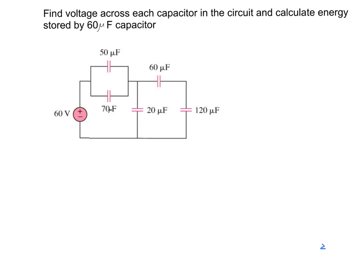Now let's start solving the problem. Looking at the circuit, we have only one voltage source of 60 volts, and this voltage is shared between all the capacitors. Because there is only one power source, we can apply the voltage divider, but for the voltage divider we need only two capacitors connected in series. So we need to simplify the circuit to replace it with a circuit of two capacitors in series.